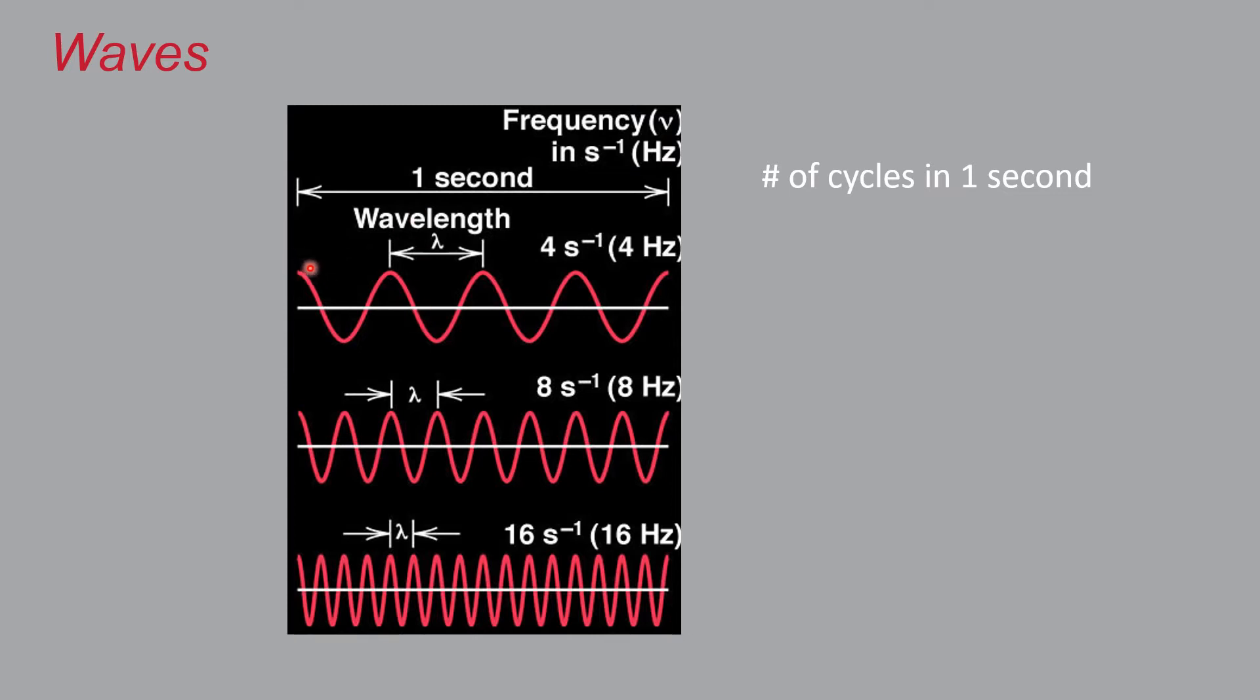In this particular wave, you've got four complete cycles that occur in one second. In this wave, which has twice the frequency, you've got eight complete cycles in that same period of time. And here we've got 16 cycles, so this is higher by a factor of four.